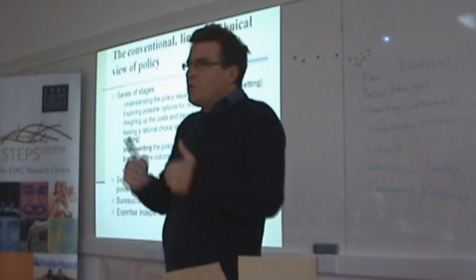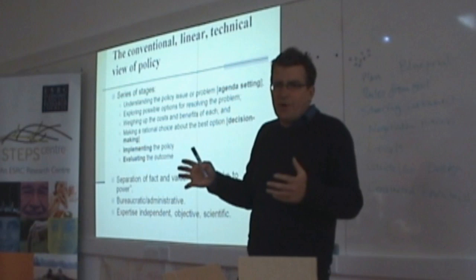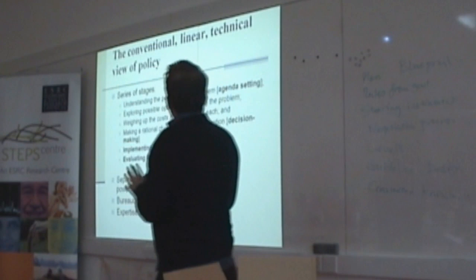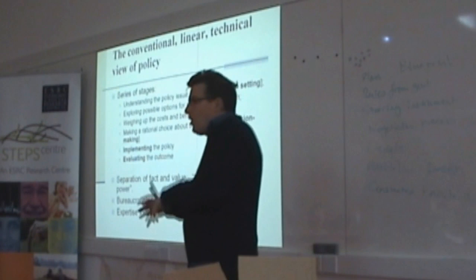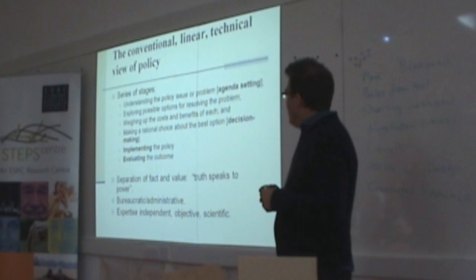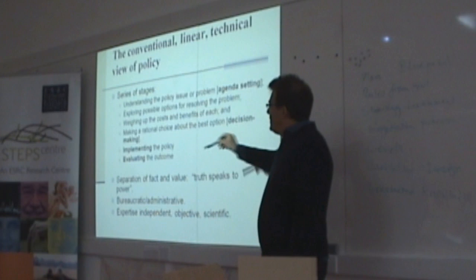Many policy analysis textbooks present this as how policy is done, and you can see echoes of this in real policy processes. But I want to argue that this linear view is not actually what happens, because all of the dynamics, all of the uncertainties, all of the politics intervene to make this rather more non-linear than suggested.